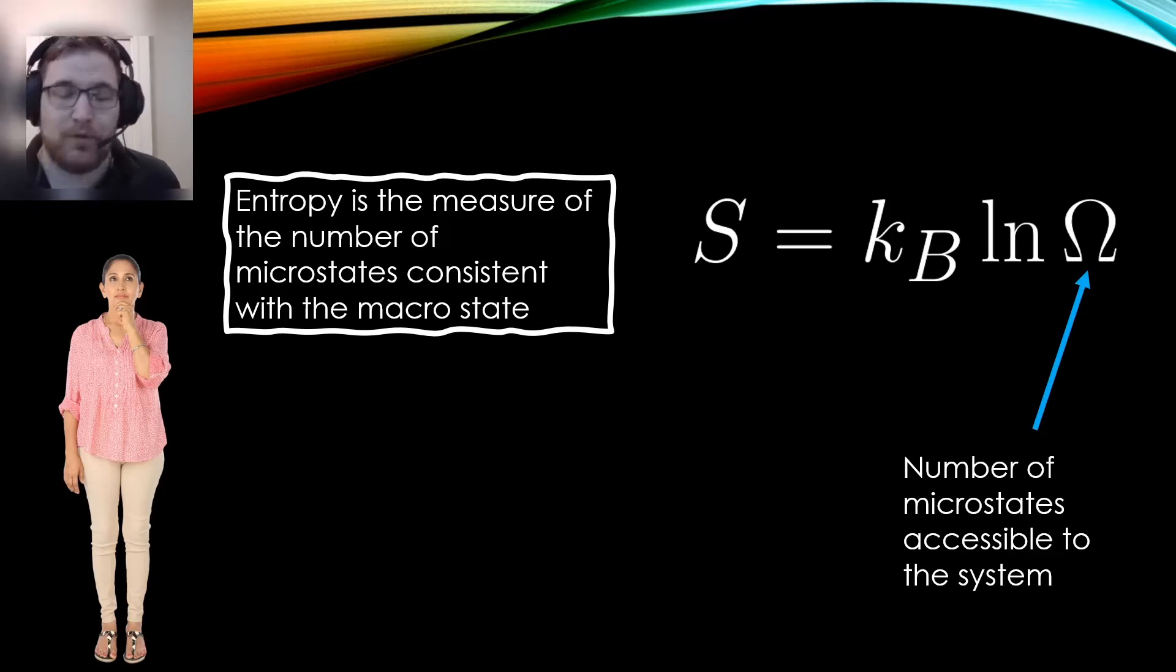This is indeed how most textbooks on statistical mechanics will introduce the quantity, and of course, it is perfectly correct. But you might be wondering, in this context, what exactly is a microstate? What is a macrostate? And why is entropy that expression in particular? So let's jump into it.